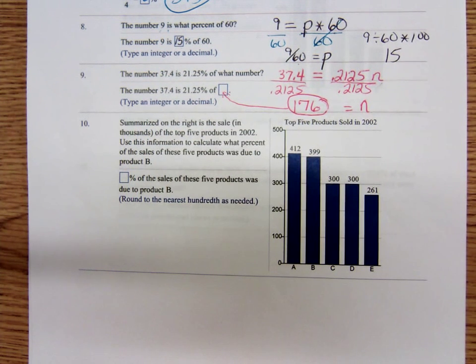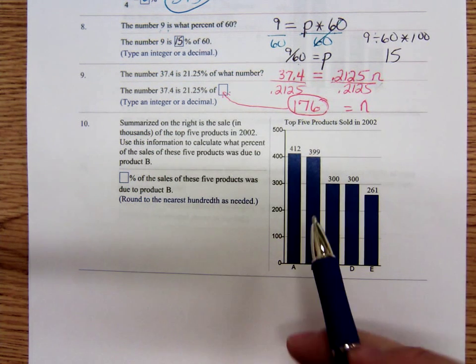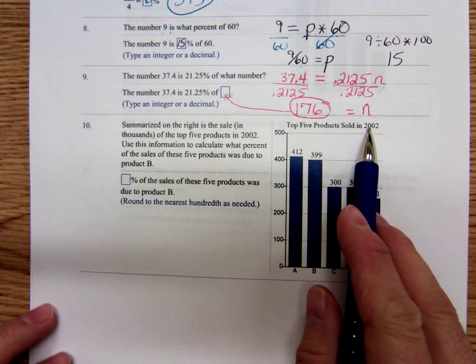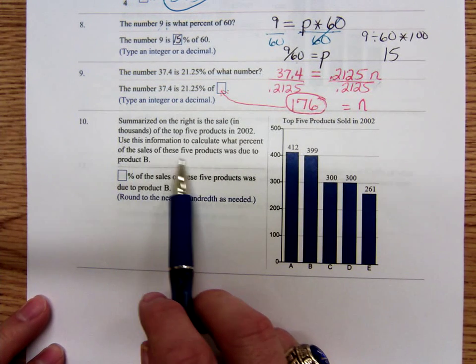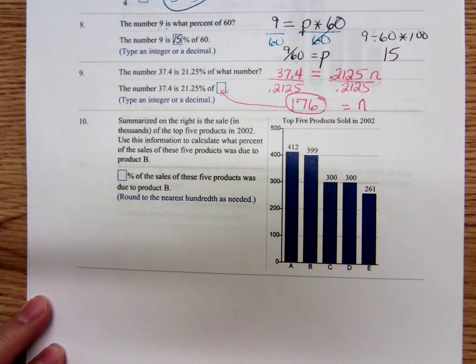Hopefully you've had a chance to read in the book about it and to watch the Pearson video. We're up to number 10 which says summarized on the right is the sale of the top five products in 2002. Use this information to calculate what percent of sales of these five products was due to product B.